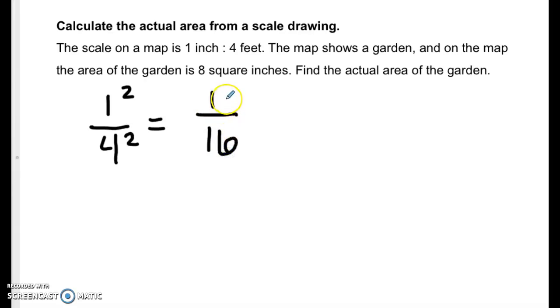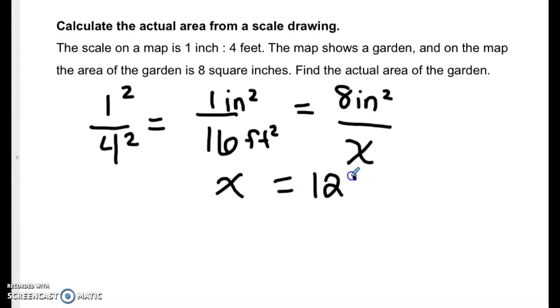So now we have inches squared and feet squared. So our units line up because we have 8 square inches and now we need to find the actual area of the garden. So let's cross multiply: 1 times x is x and 8 times 16 is 128. So the actual area of the garden is 128 square feet.